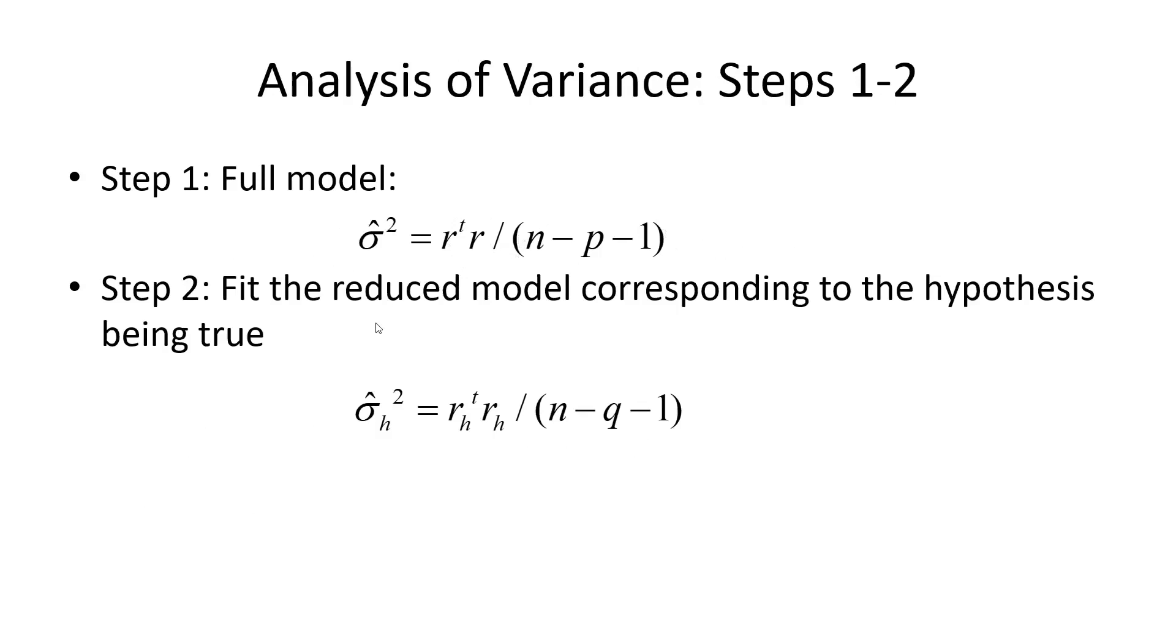Step two, fit the reduced model corresponding to the hypothesis. And then we get another estimate of sigma squared based on the residuals of the reduced model. Now, the degrees of freedom have changed because in the reduced model, we only have q parameters. Well, q variables, and then there is beta zero. Whereas before we had more, we had p variables and beta zero.